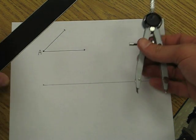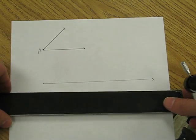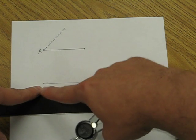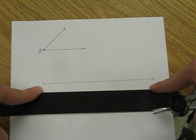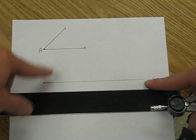We'll need our compass and straight edge. The first step we need to do is construct a ray with an endpoint. It doesn't matter how long it is, we just need to start with a ray. This is where we're going to copy our angle to.